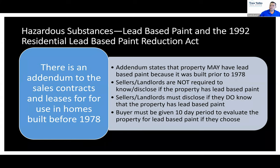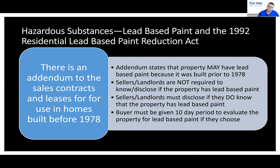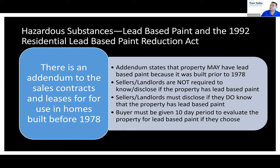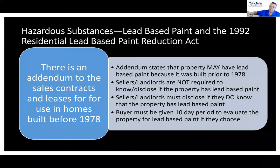Lead-based paint has been outlawed in residential property since 1978. For test-taking purposes, 1978 is the magic year. For practical purposes it had largely been phased out before then, but 1978 is the absolute cutoff. If you are selling or showing a house built after 1978, you do not need to worry about disclosing the potential of lead-based paint.